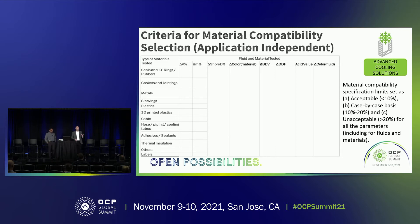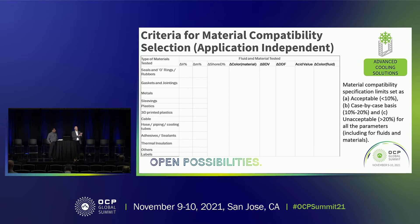We decided to take a fairly simplified guidance approach — a red light, yellow light, green light: acceptable, need to look at it case by case, and probably not acceptable. We wanted to keep this simple for two reasons. Number one, even though we have six different basic categories of fluids, there are all kinds of formulations within each one. So everything needs to be taken with some caution because a specific fluid within any given category will be slightly different — and maybe significantly different — than a cousin within that same fluid category.